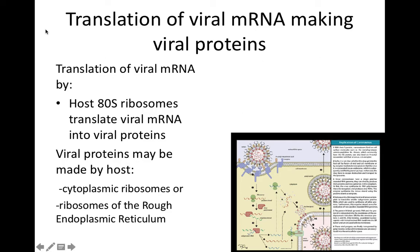Through transcription we now have viral mRNA, and host ribosomes attach to it and translate it to make viral proteins. In a eukaryotic host cell, it's the 80S ribosomes that translate the viral mRNA into viral proteins. Viral proteins can be made by cytoplasmic ribosomes or by ribosomes attached to the rough endoplasmic reticulum. Coronavirus envelope proteins — like the S protein (spike) and the HE co-receptor — are made by ribosomes on the rough ER and inserted into the rough ER membrane.